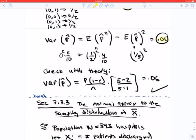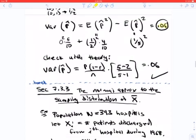And you can check this with theory just using this formula. The variance of p hat is indeed 0.06 using the correction factor given here.